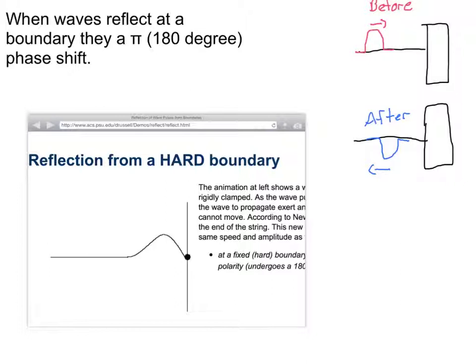Here, my wave pulse comes in, it hits, and it reflects at 180 degrees or pi out of phase. So it starts out on top and then reflects opposite — down on the bottom — a pi phase shift. So it comes in, it hits, and then it reflects back on the bottom. Whenever reflection occurs, you have a pi phase shift.